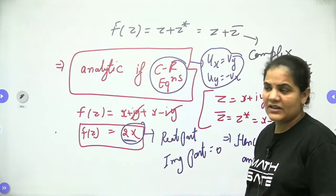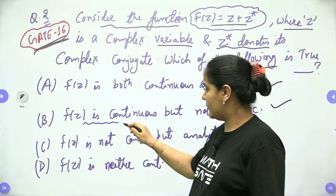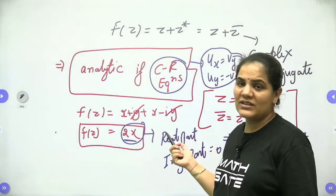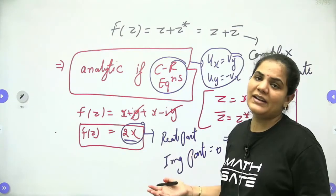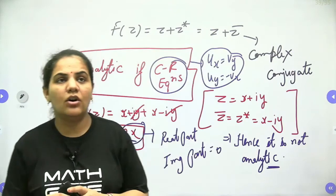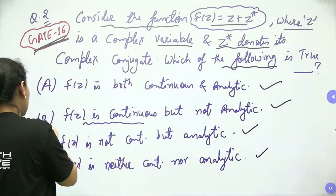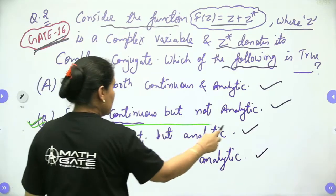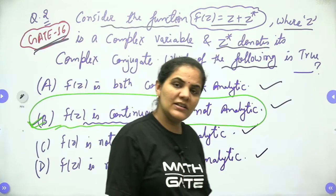Since f(z) equals 2x is a simple polynomial (algebraic function), it is definitely continuous — as we learned in the mean value theorem, any polynomial is always continuous. So the function is continuous but not analytic, which is option 2.